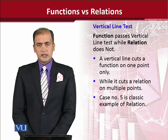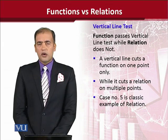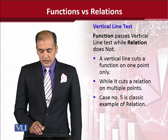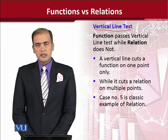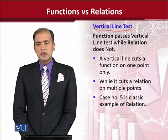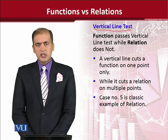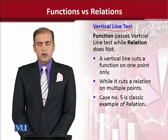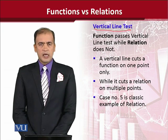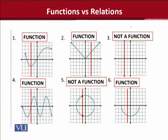The second test that we can apply to see if we are dealing with a function or a relation is the vertical line test. It is a simple test where we make a vertical line and see if it passes through one point on the function curve, or if it intersects the curve at more than one place. It is better understood with the help of a diagram. There are basically six cases here.